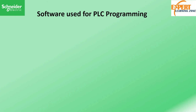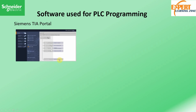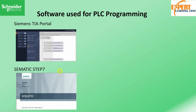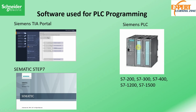To begin, we are going to study the different software that we can use to program some of the popular PLC brands. We have the Siemens TIA Portal and the Siemens Step 7 — these are the software used to program the Siemens brands of PLC, for example the Siemens S200, S300, S400, S500, up to the S1500. TIA Portal has been found to be the most widely used.